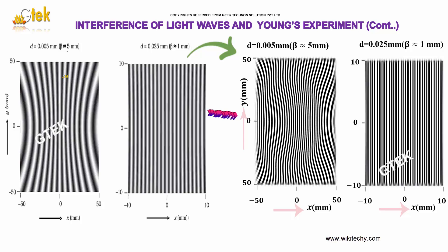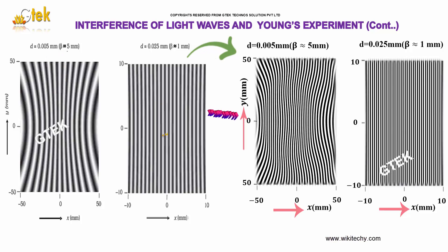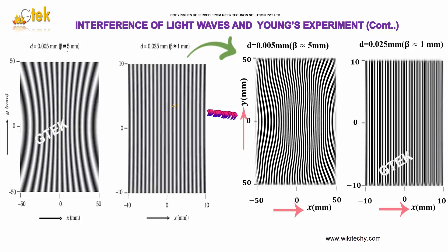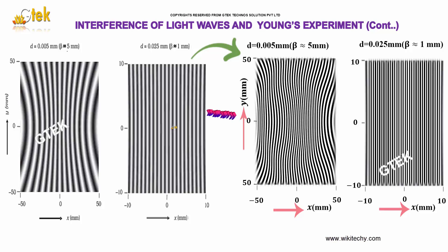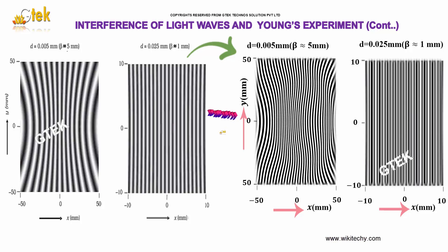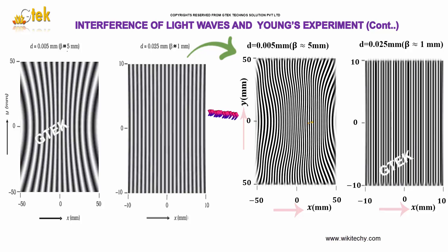You are able to see the fringes here. D = 0.005 mm and this one is 0.0025 mm. You can see the dark and bright fringes.